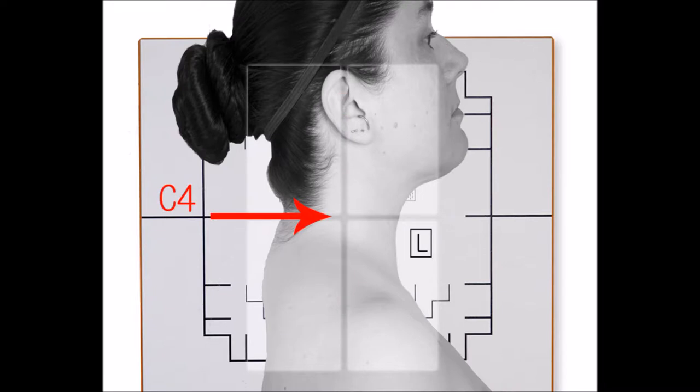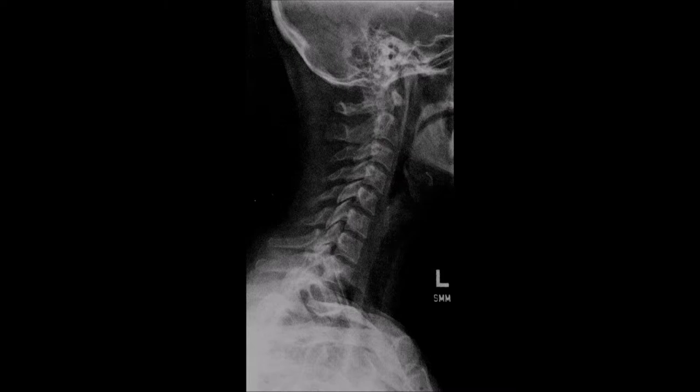Direct the CR at C4 and perpendicular to the IR. Ask the patient to protract the chin to prevent superimposition of the mandible on the upper vertebrae.